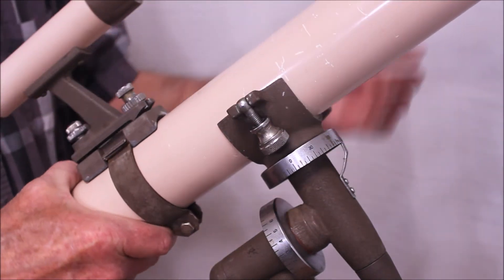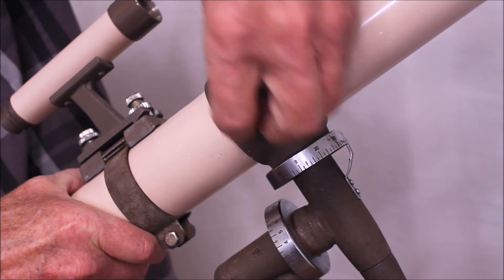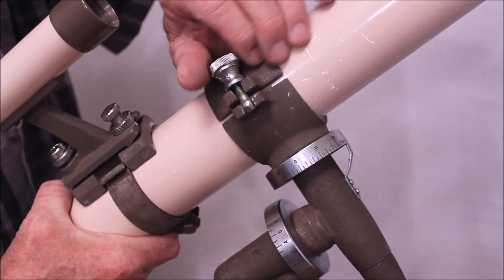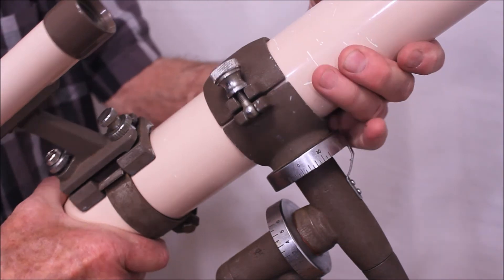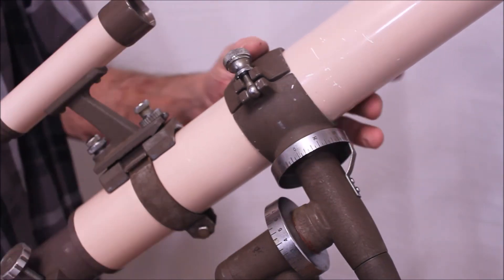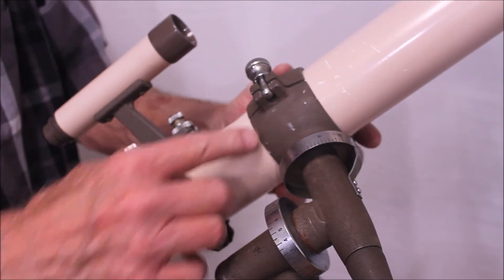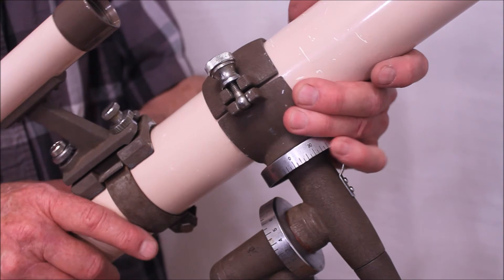This is quite reminiscent of Takahashi. It looks exactly like a Takahashi. Swift and Takahashi are closely related. Sometimes many of these early Swifts were probably made by Takahashi. At least some components. Certainly these mounts, a lot of the features here look exactly like Takahashi.